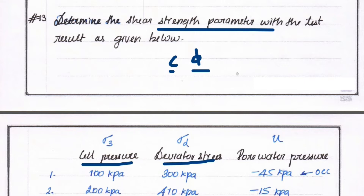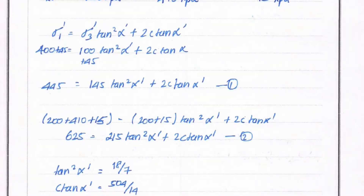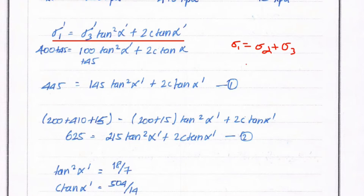We have to find the shear strength parameters c and phi, where phi is the angle of internal friction. We use the formula: sigma 1 dash equals sigma 3 dash times tan squared alpha plus 2c tan alpha. First, we find sigma 1. Sigma 1 equals deviator stress plus cell pressure, so sigma d plus sigma 3.